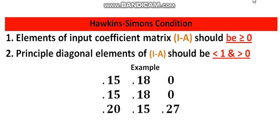Today I'll talk about the Hawkins-Simons condition, which is very important for input-output analysis. The Hawkins-Simons condition has two important criteria designed by Hawkins and Simons together for the economic system — specifically for the input-output or input coefficient matrix — so that the economy is viable.